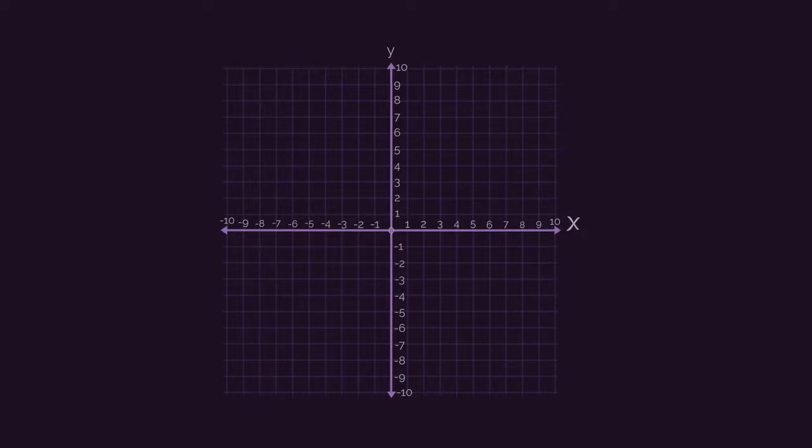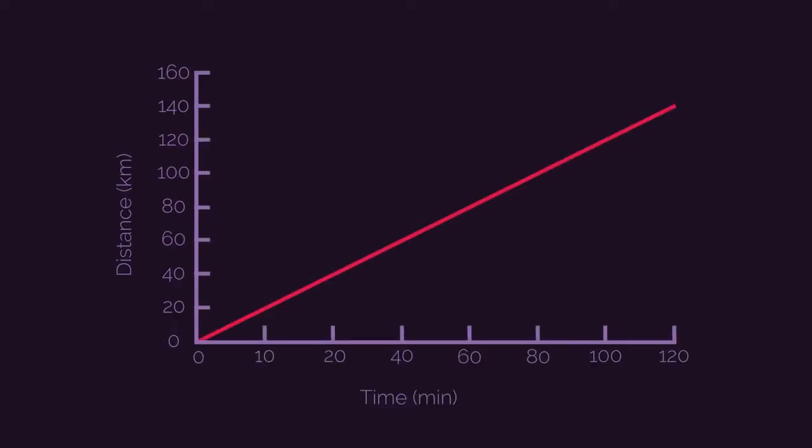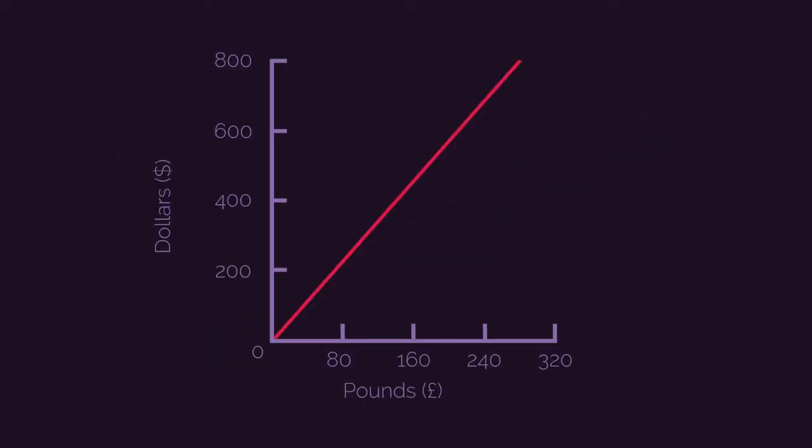Sometimes you are given a straight line and you need to find its gradient, because the gradient tells us some important information. Like on a distance time graph, the gradient is the speed. Or on a currency conversion curve, it tells us the exact conversion rate.